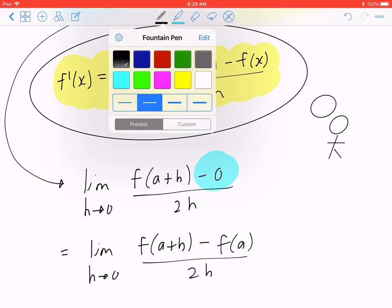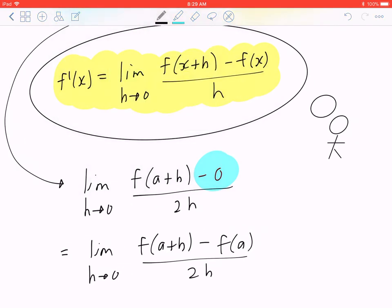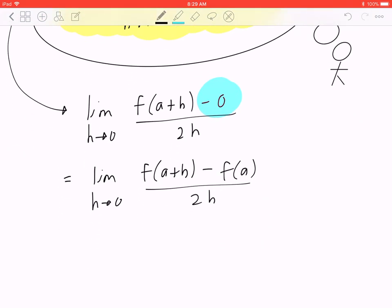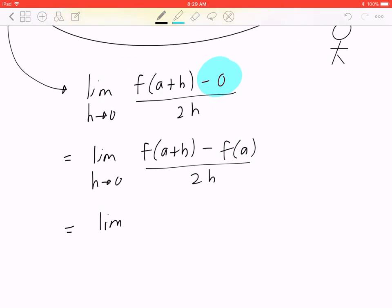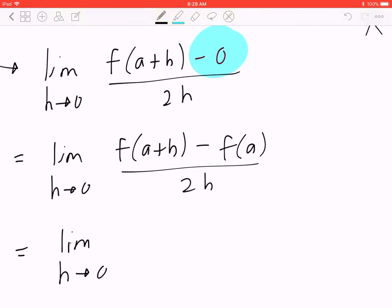If you compare the first principle with what we have, there's a factor of two or a factor of half you can bring to the front. So if you look carefully, this is the limit as h approaches zero of f of a plus h minus f of a all over h.